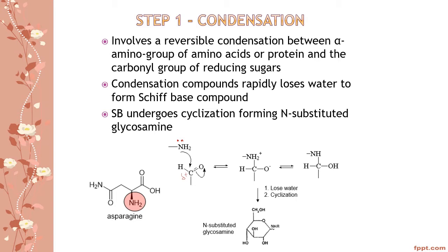This reaction gives a protonated amine product, which inter-converts with a more stable structure that has no charge. When this protonated amine product loses water and undergoes cyclization, it gives us the N-substituted glycosylamine. This is the first compound formed after the reaction of amino acid and the reducing sugar.